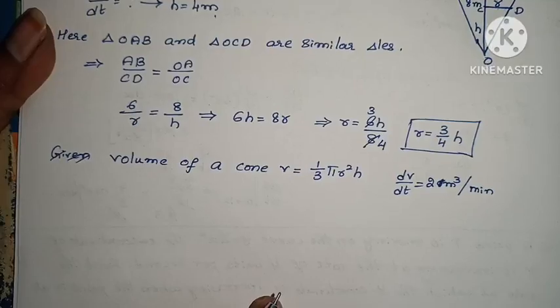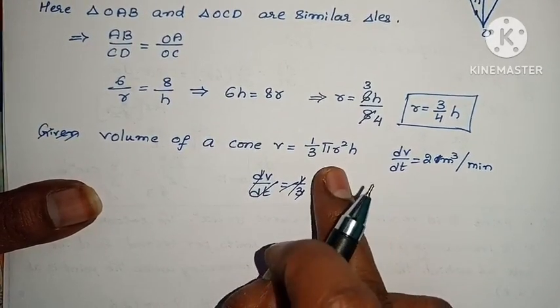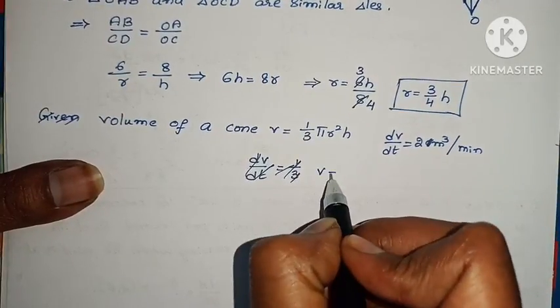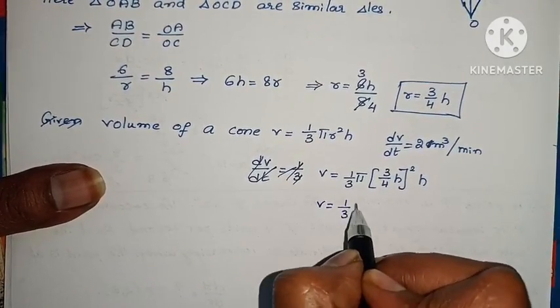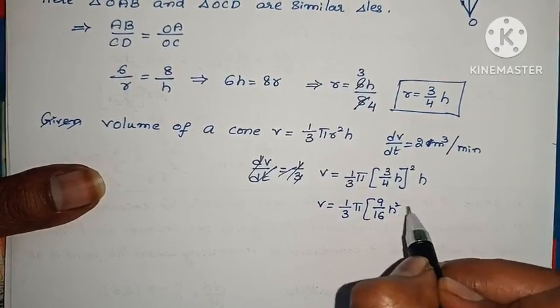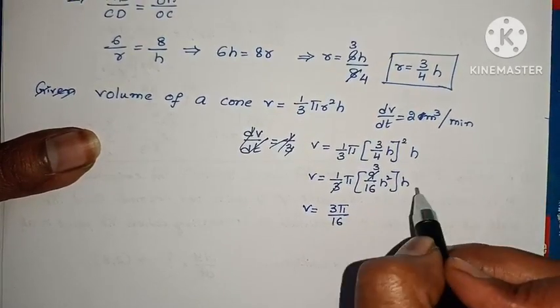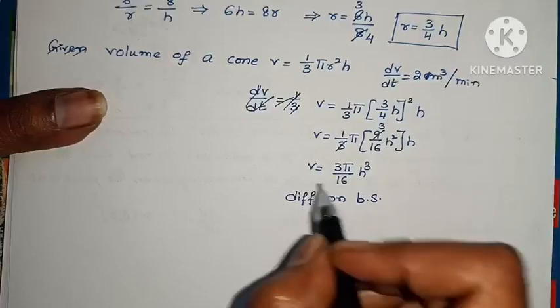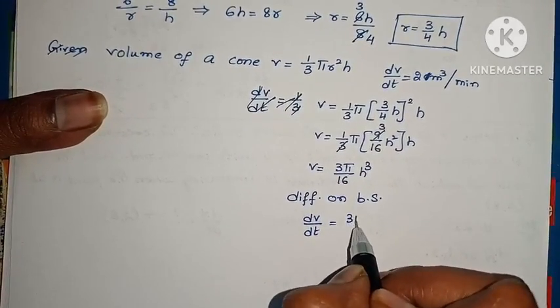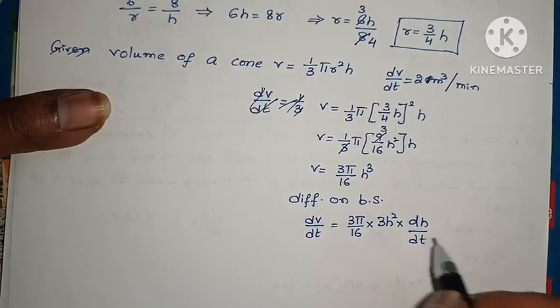dV/dt is 2 m³ per minute. Volume V equals 1/3 π r²h. Substitute R equals 3/4 H: V equals 1/3 π (3/4 H)² into H. This gives V equals 1/3 π times 9/16 H² into H. So V equals 3π/16 H³. We need dH/dt, so differentiate both sides.